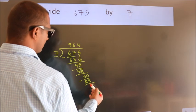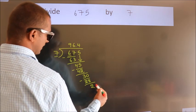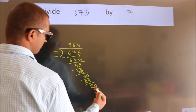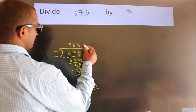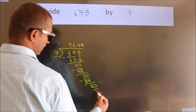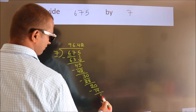After this, we already have the decimal, so directly take 0. So 20. A number close to 20 in the 7 table is 7 twos, 14. Now we subtract. We get 6.